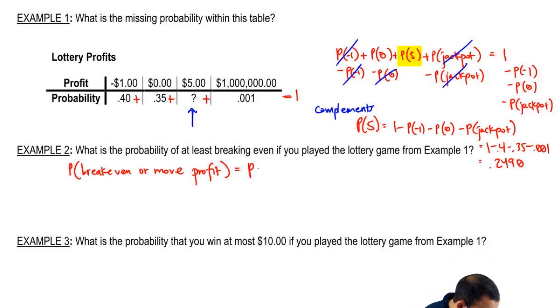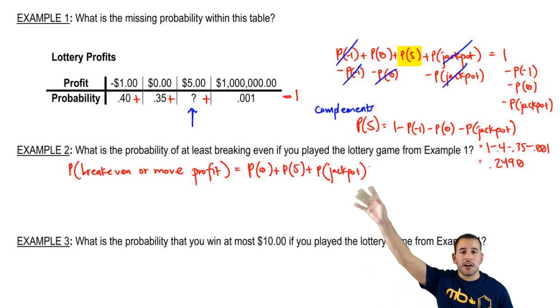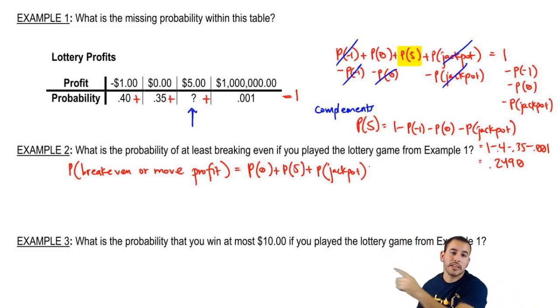So probability of breaking even - breaking even is winning how much money? Zero dollars. Plus the probability of, what other options do we have? What other outcomes that are greater than breaking even? We have five dollars, and we also have probability of jackpot. So now normally with the addition rule, what do we do at the end? Once we add everything up, we would subtract by probability of A and B. But in this situation here, you don't win zero dollars and five dollars at the same time. So these events, these outcomes here are all disjoint. So when it's disjoint, we don't have a probability of A and B at the end. So we literally just add up the probabilities associated with each of the outcomes.